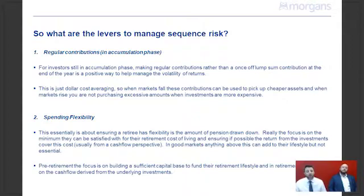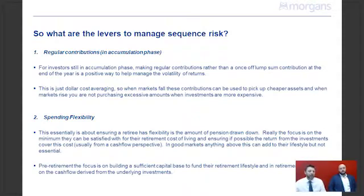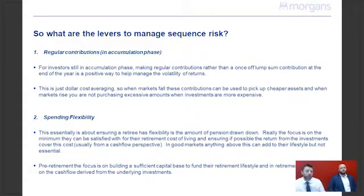This is simply dollar cost averaging. When markets fall, we're picking up cheaper assets periodically. When markets are higher, we're buying more expensively priced assets. As opposed to putting a lump sum in — where you pick up whatever return is available at that particular point, which could be a windfall if assets are cheap or less so if they're expensive. Obviously over time that smooths out.